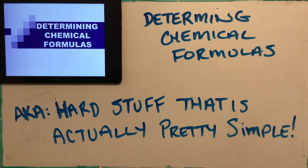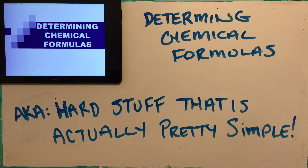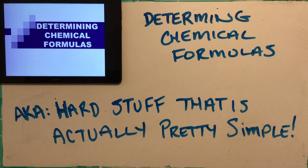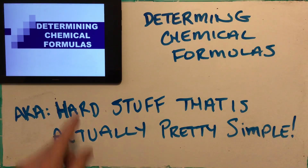Alright, Chem 11 students, today we're going to be looking at the determination of chemical formulas. It seems like hard stuff but it's actually pretty simple. It's going to relate back to converting moles into grams and that sort of thing, which you've already done. So if you can do that, then this isn't actually that hard at all.